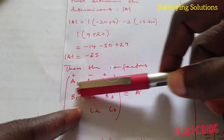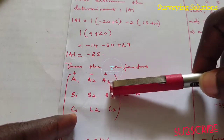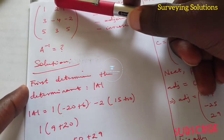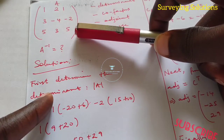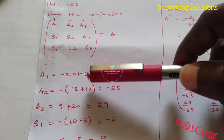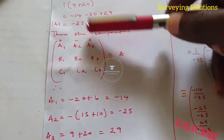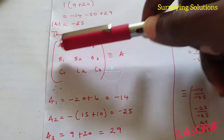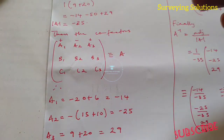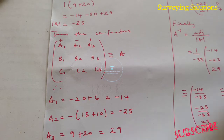For cofactor a2, we are still not seeing the first row and we're not seeing the second column, so we're only seeing b1, c3 and b3, c1. Since we're at this stage — 3 times 5 is 15, minus minus 2 times 5 which is 10 — that gives us 15 plus 10 which is 25. Pay attention to the sign: the signs are alternating plus, minus, plus, minus, so each element has a corresponding sign depending on how the signs alternate.